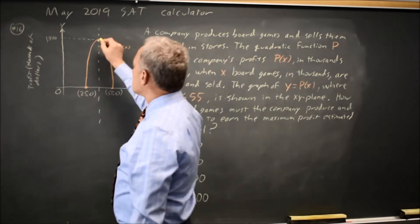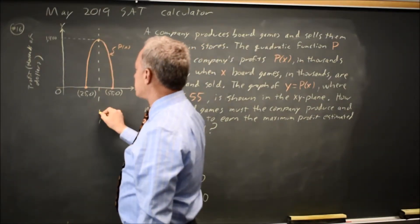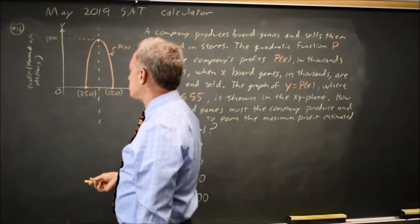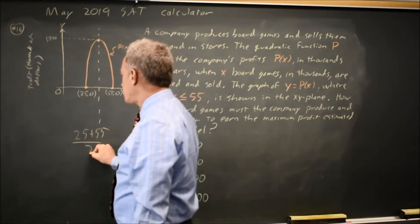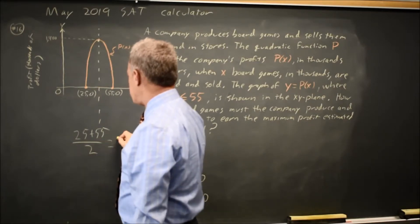And the vertex, because this is a line of symmetry, will be midway between two zeros. So 25 plus 55 over 2, which is 80 over 2 is 40.